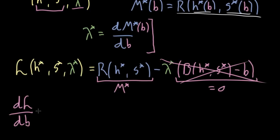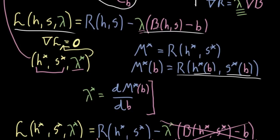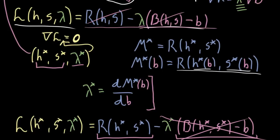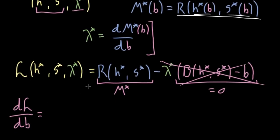What we ultimately want is to understand how that maximum value changes when considered as a function of the budget. So we can look at how the Lagrangian changes as a function of the budget. If you just look at the definition of the Lagrangian and take the derivative with respect to little b, this r term goes to zero — no b in it. This other term also goes to zero. All you're left with is negative lambda times negative b, and the derivative of that with respect to b would be lambda.